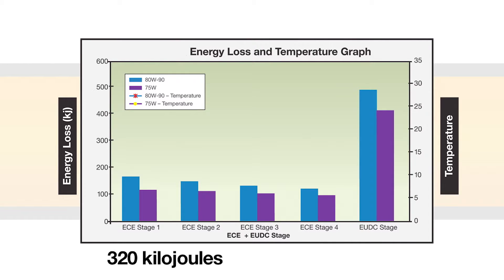The total difference in energy loss between the oils was 320 kilojoules, representing a transmission efficiency gain of 30%.